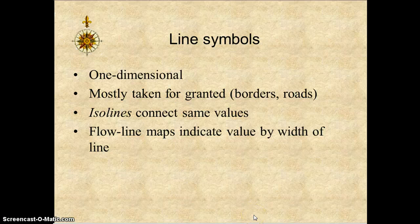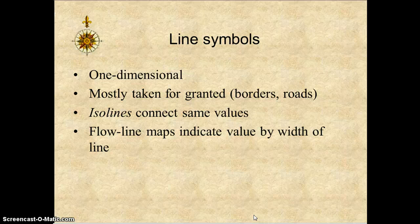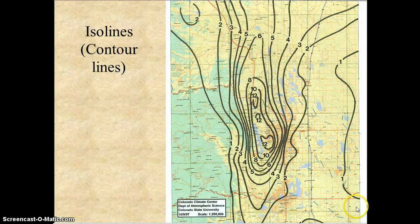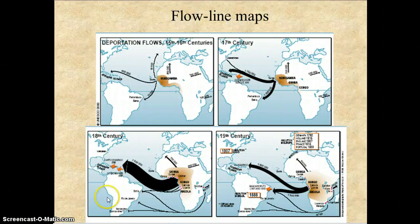Line symbols are one dimensional. They are mostly taken for granted because on a map they are showing borders and roads. Flow line maps indicate a value by the width of the line, which would be used more in showing elevation. This map is showing the National Park, with contour lines and elevation. Flow line maps are also used for showing things like transportation.